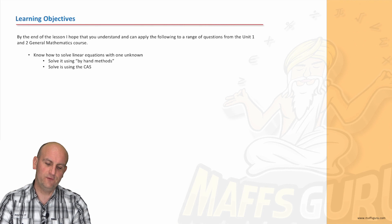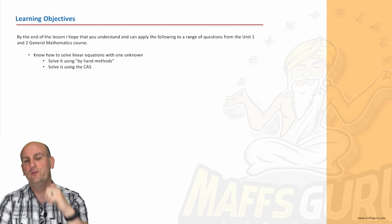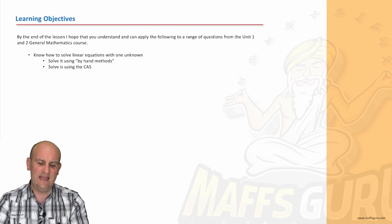What's our learning objective? How to solve linear equations with one unknown. What is this unknown business? Using by-hand methods and of course using the CAS because this is a CAS course.